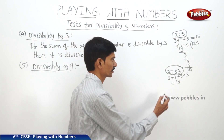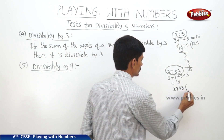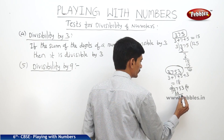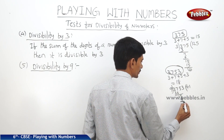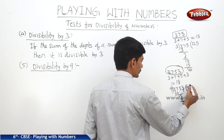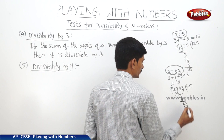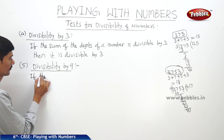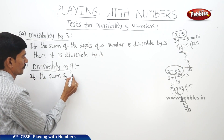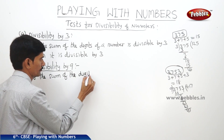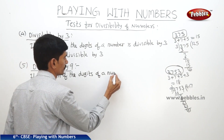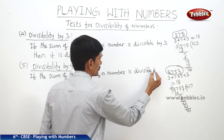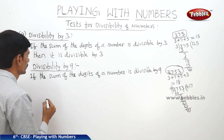Let us verify whether 3753 is divisible by 9 or not. Dividing: 9 times 4 is 36, remainder 1; carrying through the digits, 9 times 7 is 63, remainder 0. So we can write that if the sum of the digits of a number is divisible by 9, then it is divisible by 9.